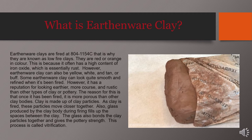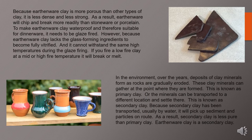Clay is made up of clay particles, and after those particles are fired they come quite close together. The glass produced by the clay body during firing fills up the spaces between the clay particles. The glass also bonds the clay particles together and gives the pottery strength — this process is called vitrification. Earthenware clay is more porous than other types because it is less dense and less strong, and as a result earthenware will chip and break more readily than stoneware or porcelain.